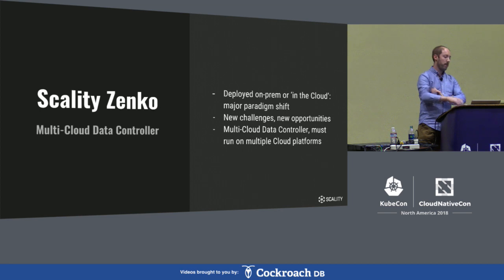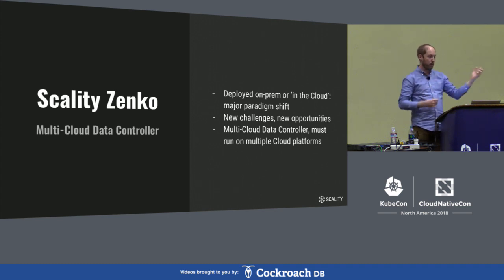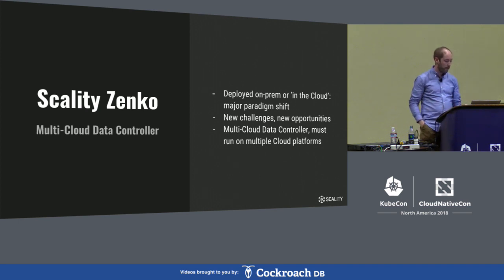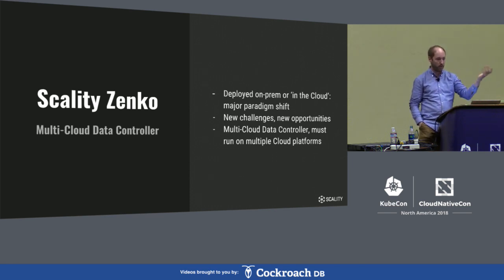Then finally we started building something called Zenko, which is a multi-cloud data controller. It allows you to move data from one cloud — be it on-prem, in Ring, in Azure, to AWS, to GCP, or whatever else — and apply certain rules and workflows to those objects. It can be deployed in the cloud or on-prem, which for us is a major paradigm shift, because before all we did was in the data center of a customer. Now all of a sudden we have something which must also be able to run in AWS, GCP, and Azure, which brings a lot of new challenges but also lots of opportunities.